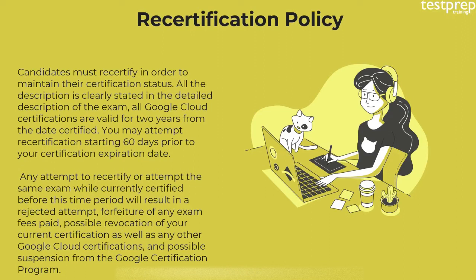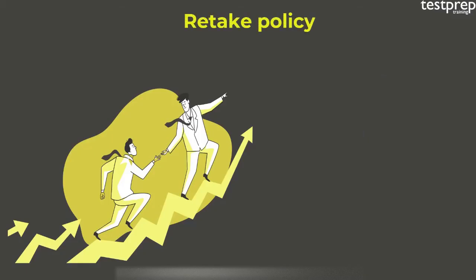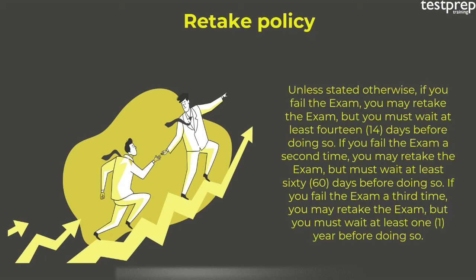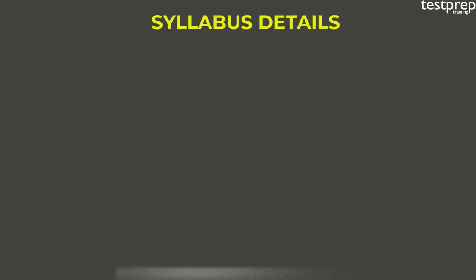Violations may also result in possible suspension from the Google Certification Program. Retake policy: If you fail the exam, you may retake it, but you must wait at least 14 days. If you fail a second time, you must wait at least 60 days. If you fail a third time, you must wait at least one year before doing so.